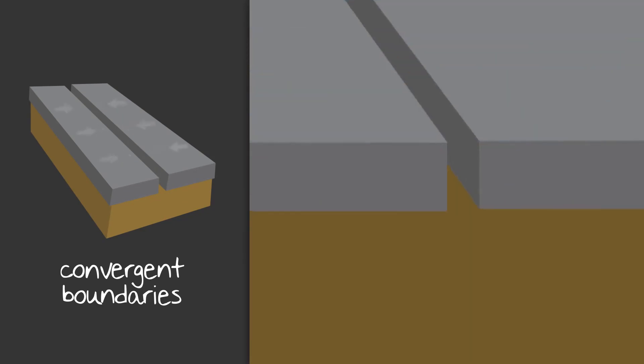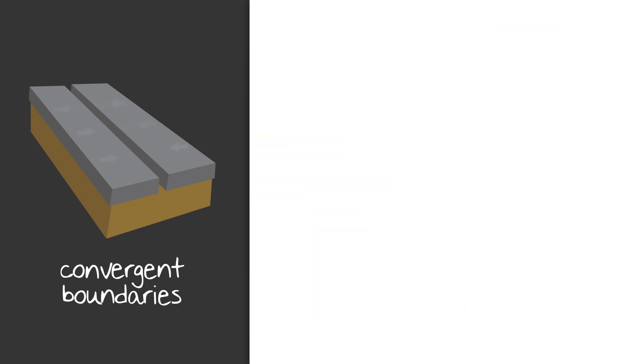But although movement at convergent boundaries is usually gradual, as pressure underground builds, the impact above ground can be quick and violent. Fast movement or slipping of the land can result in earthquakes either above ground or under the ocean. And convergent boundaries aren't the only type of boundary that can result in earthquakes.